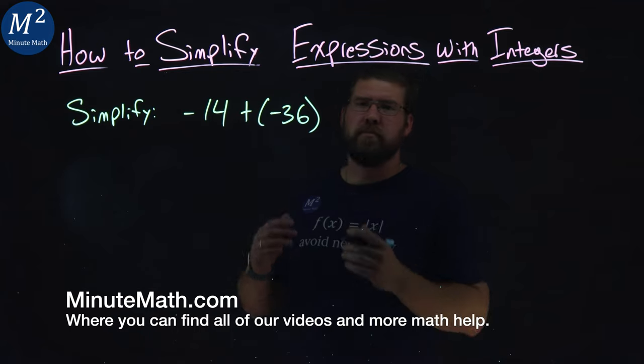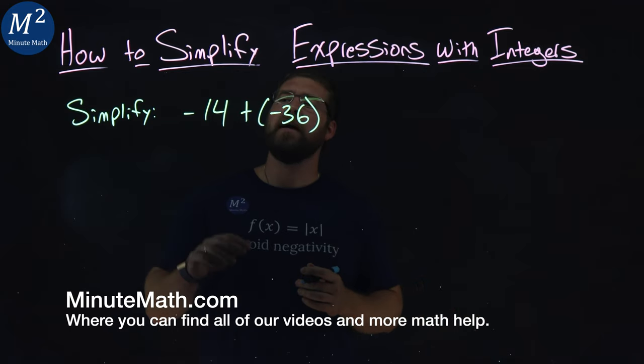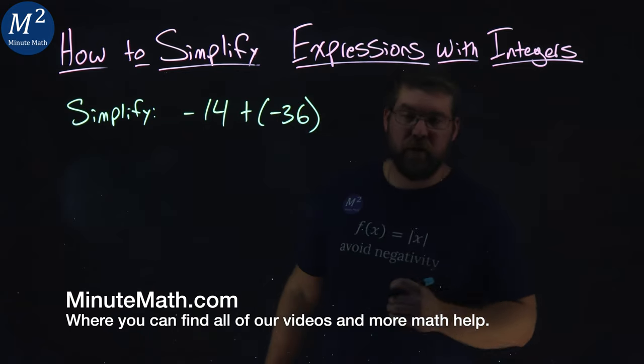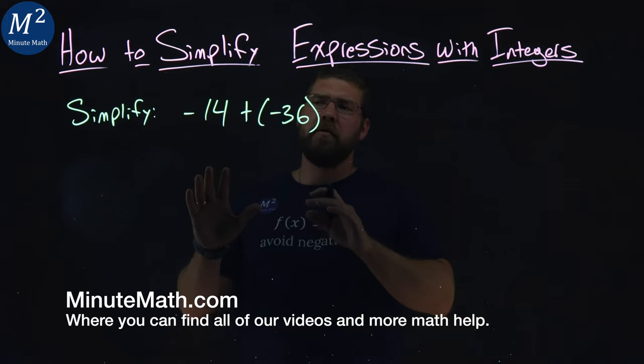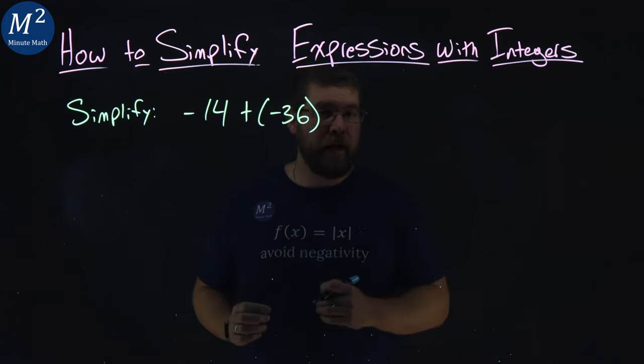We're given this problem here. We want to simplify negative 14 plus negative 36. Now one thing we notice here, we're adding two numbers, but they're both negative.